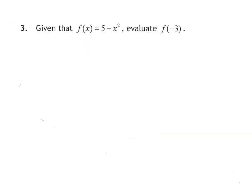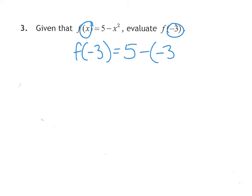Question 3 is functions. The x has been changed to minus 3, so f(−3) = 5 − (−3)². Minus 3 squared is positive 9, so we have 5 − 9, which is minus 4. Nice and easy, those ones.